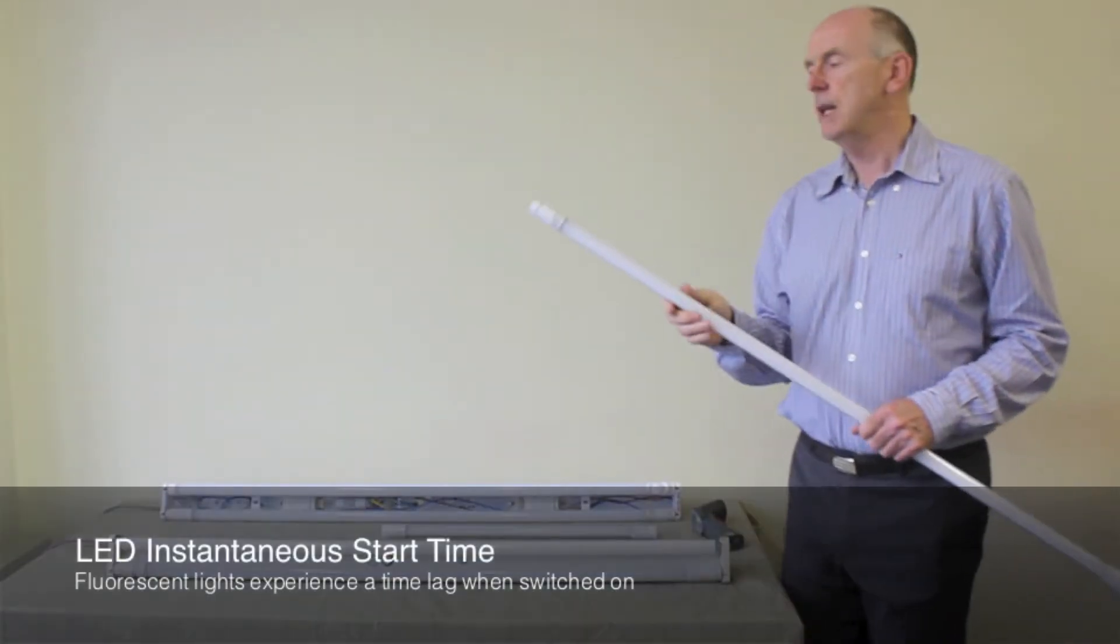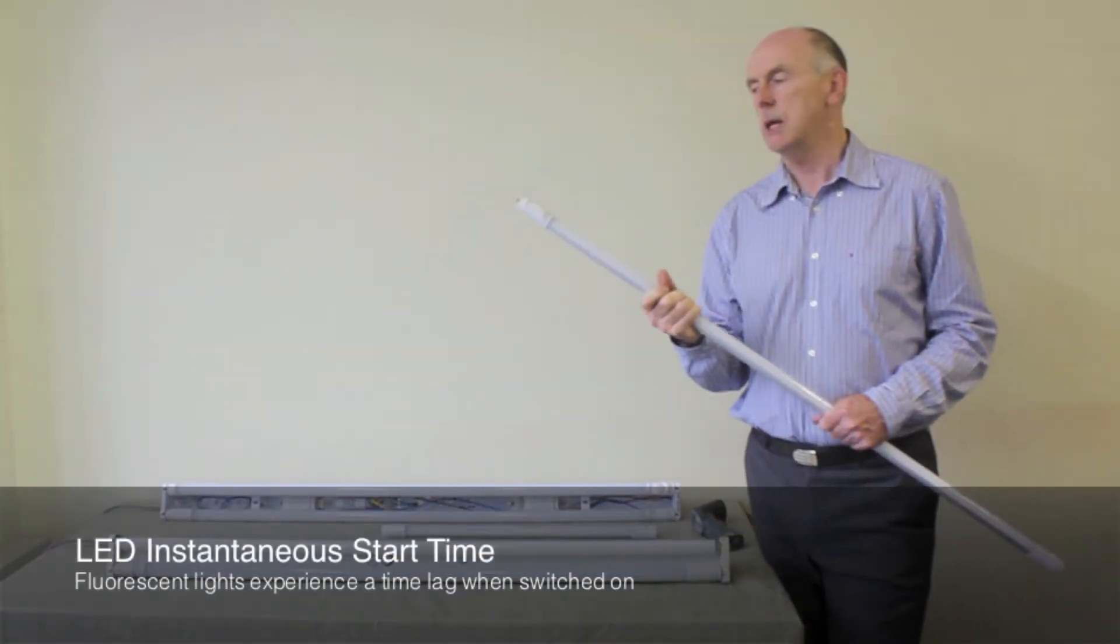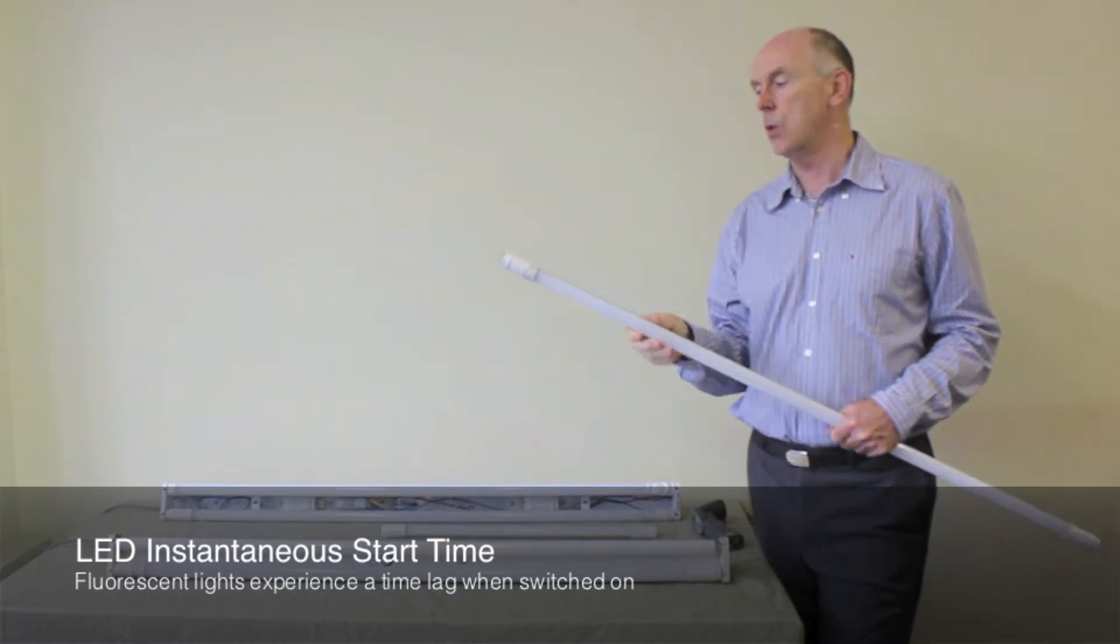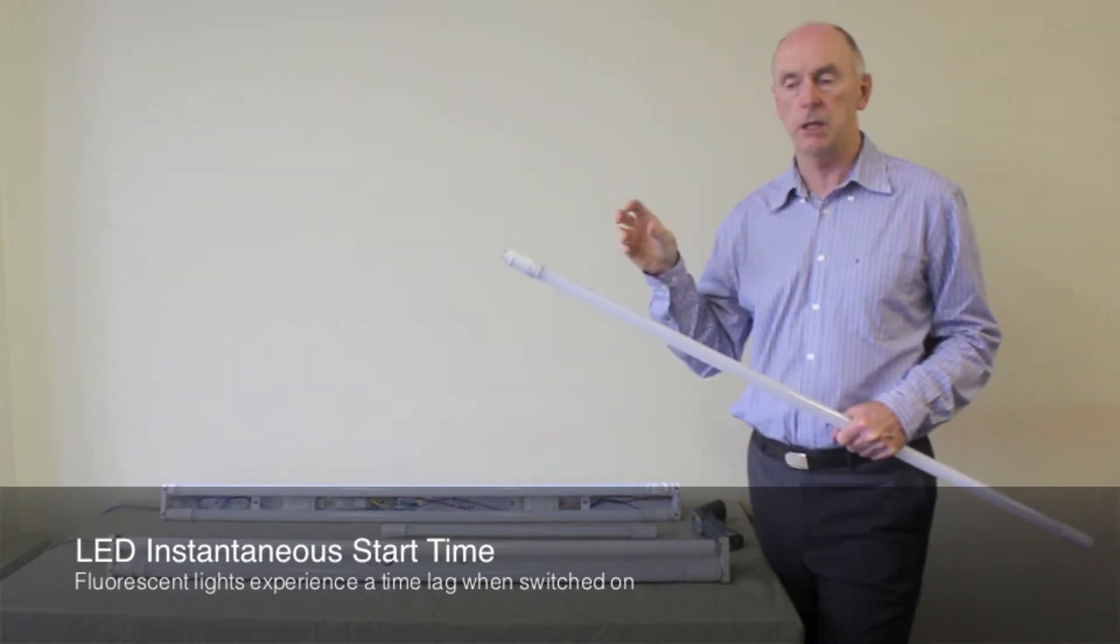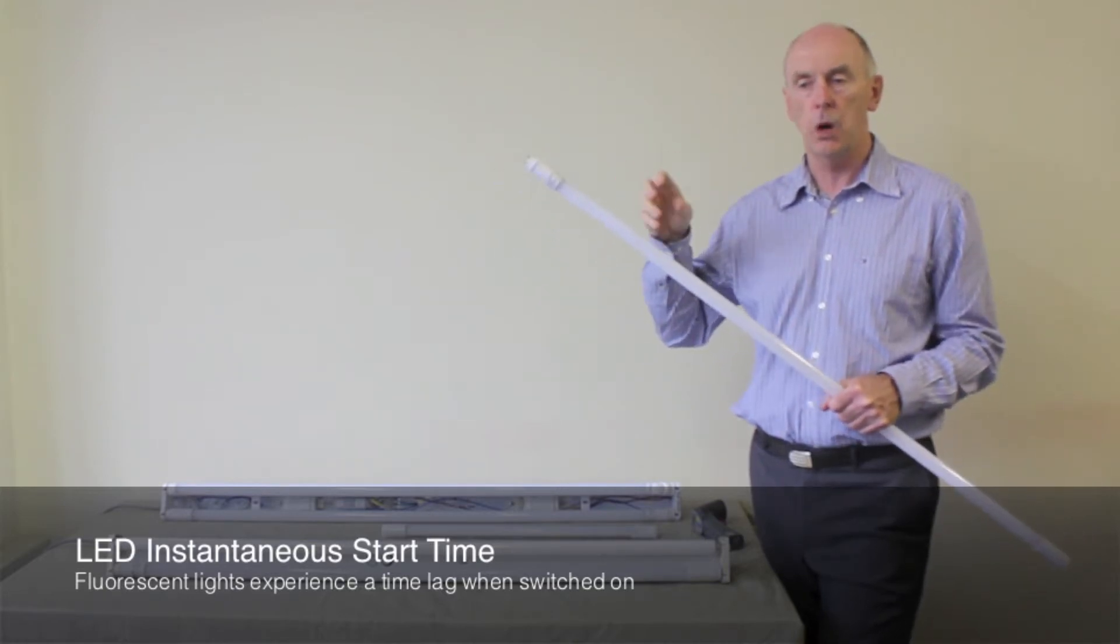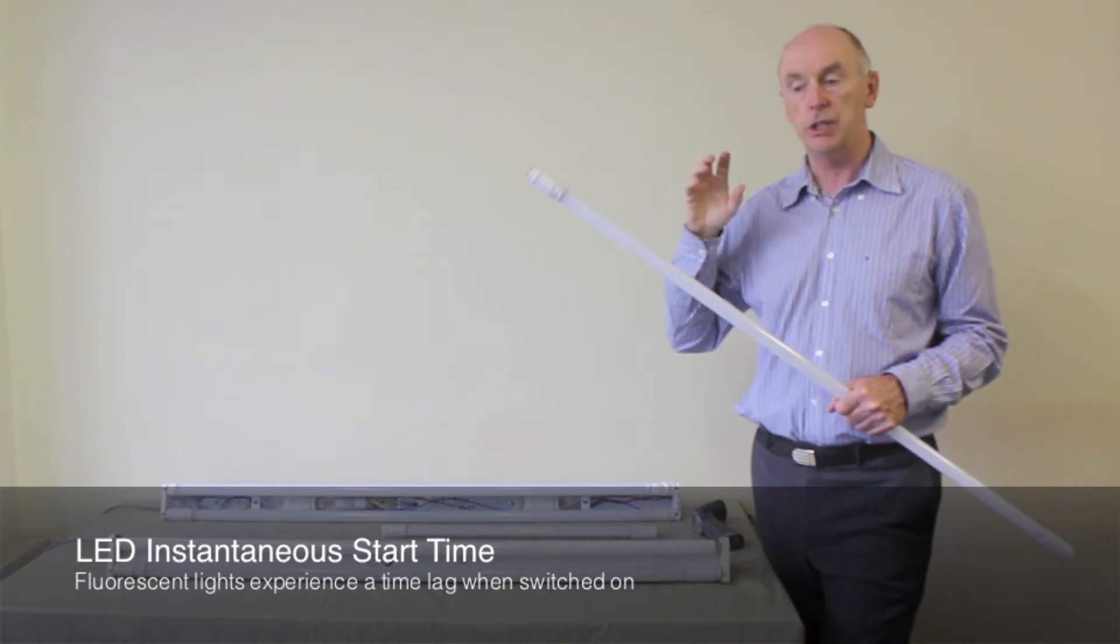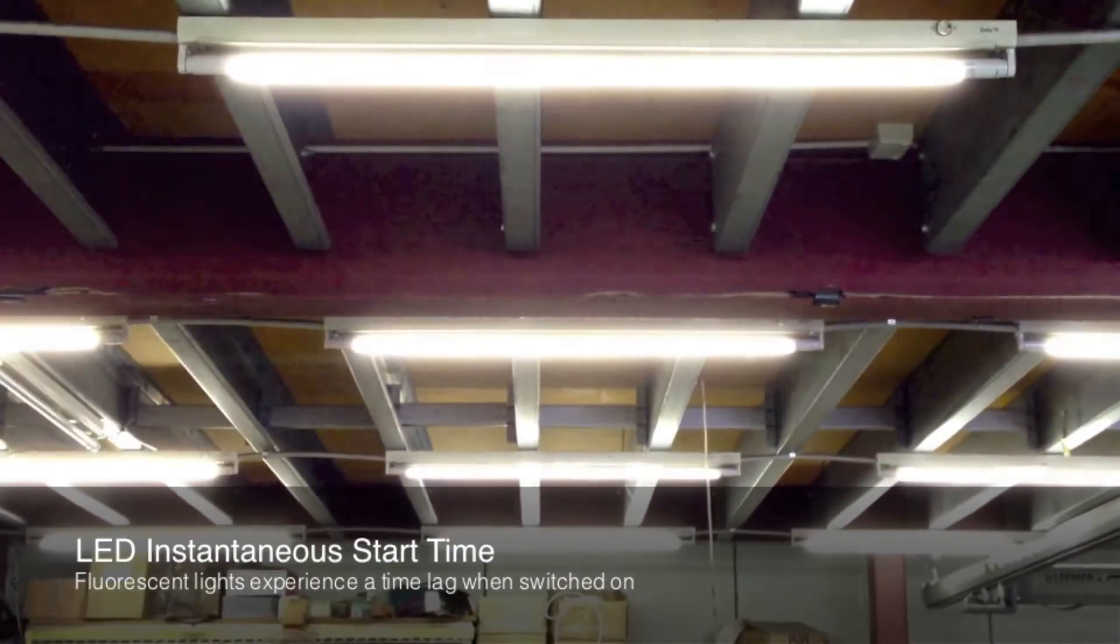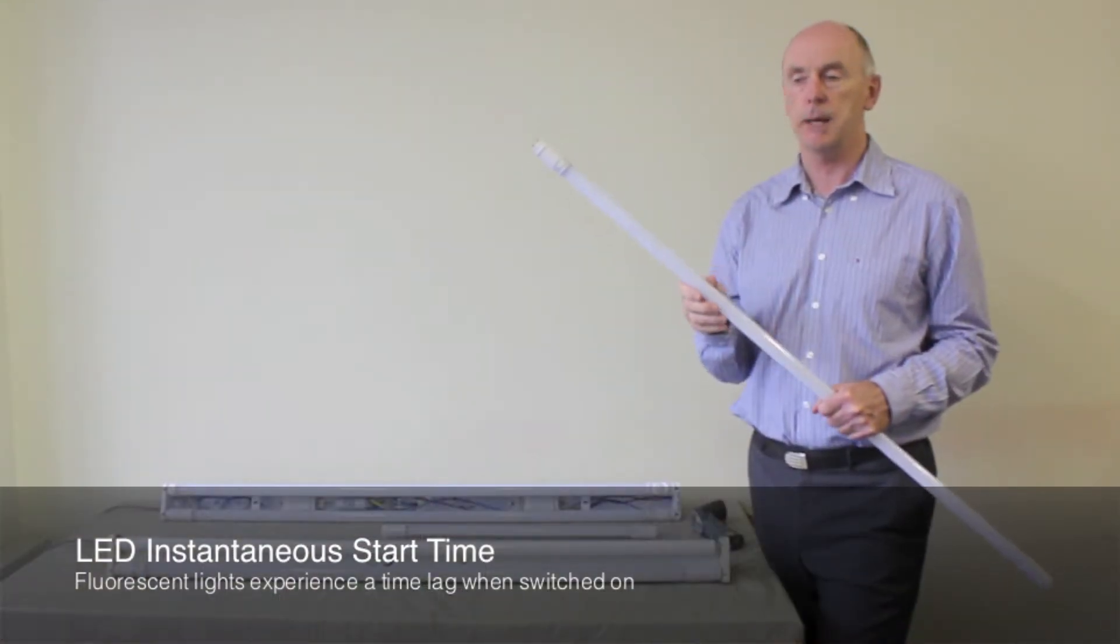One of the advantages of LED tubes is that they have instantaneous start. What's that mean? Well when you start a normal fluorescent light, the starter or the starting mechanism normally takes a while to heat the lamp because it's a discharge device, but with the LED tube it comes on instantaneously because it's from the little LED chips. That has an advantage in many applications.